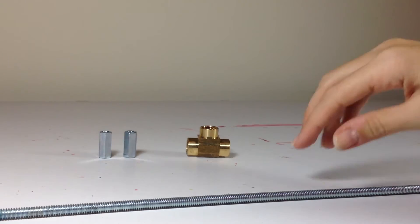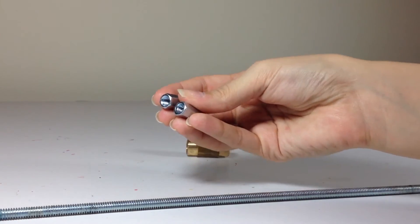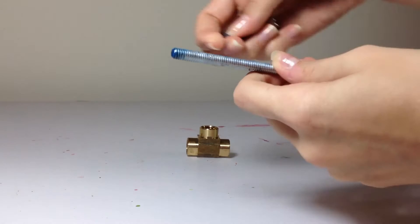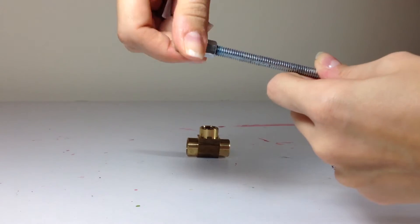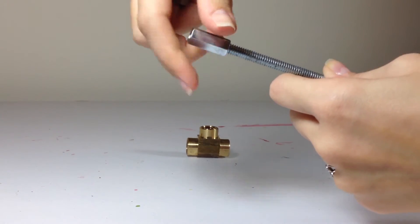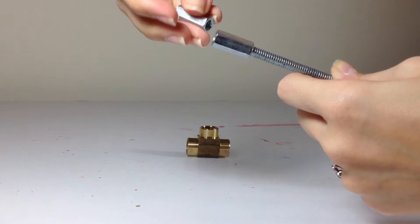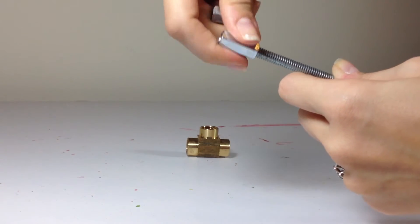So the first step is putting two coupling nuts onto your threaded rod and do this on the same end because we want them to kind of connect to each other once they're on the rod.